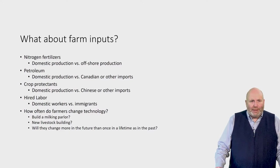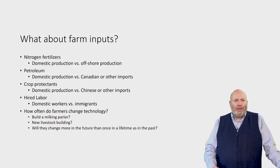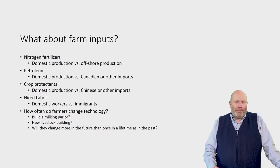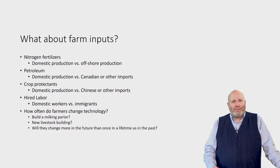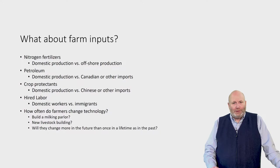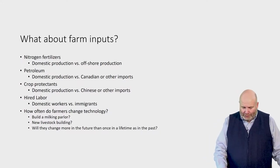Farm inputs include petroleum, crop protectants, and technology changes like building a milking parlor or a new livestock building. All of these things in terms of farm inputs are going to affect the supply curve. In general, as costs go up for all farmers, the supply curve is likely going to shift backwards, holding everything else constant.